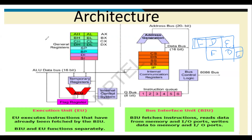The 8086 has two units: the execution unit and the bus interface unit. The execution unit consists of all the general purpose registers, the ALU (arithmetic logic unit), temporary registers, and the flag register. We have seen five flags in 8085 as well as 8051. The flag register content gets altered depending on the arithmetic content. There is also an internal control system to coordinate the entire processor.